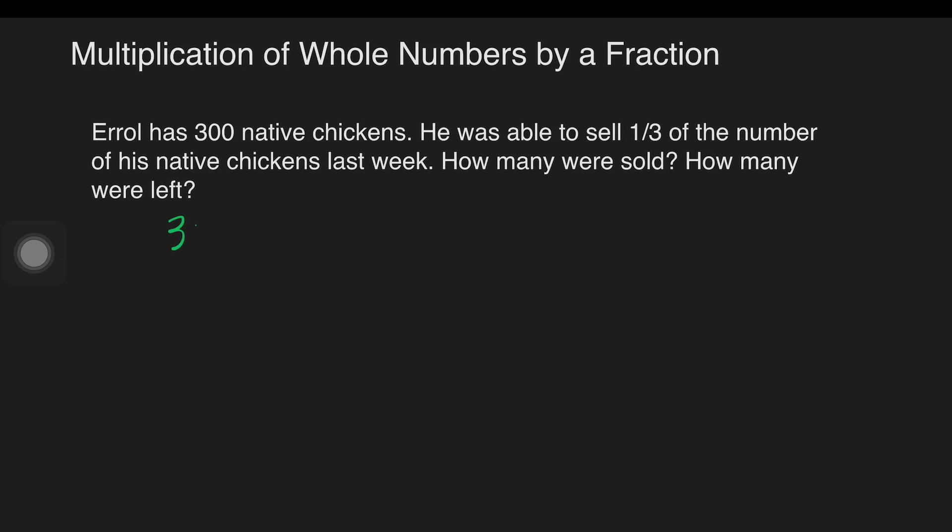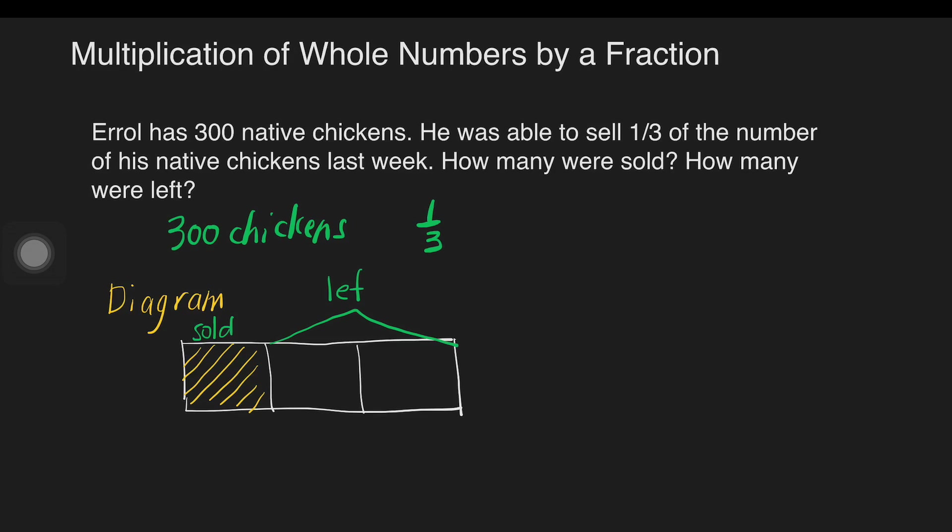We're given 300 chickens and one-third of the chickens. Let's have a diagram in order for us to have a better picture of the problem. We will draw a box, then we are going to divide it into three. And one-third of the native chickens were sold, so we will shade one-third of it. This is the sold part, and this one were left.